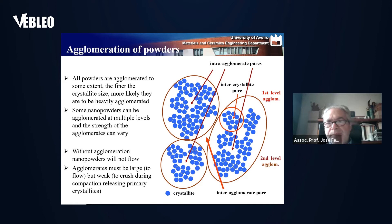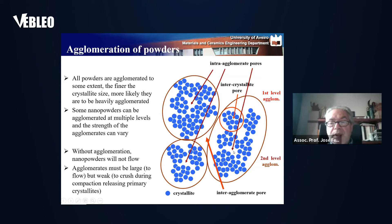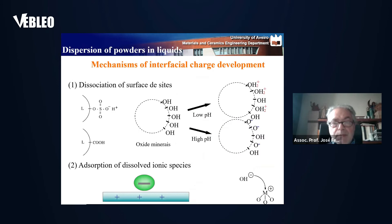As you know, all powders are more or less agglomerated and we need to destroy the agglomerates when we want to process the powders properly, in order to avoid the big pores, the inter-agglomerated pores and some of the intra-agglomerated pores. So we need to invest efforts in dispersion. When you put powders in a liquid like water, there is always some dissociation of surface groups, and they are pH-dependent.